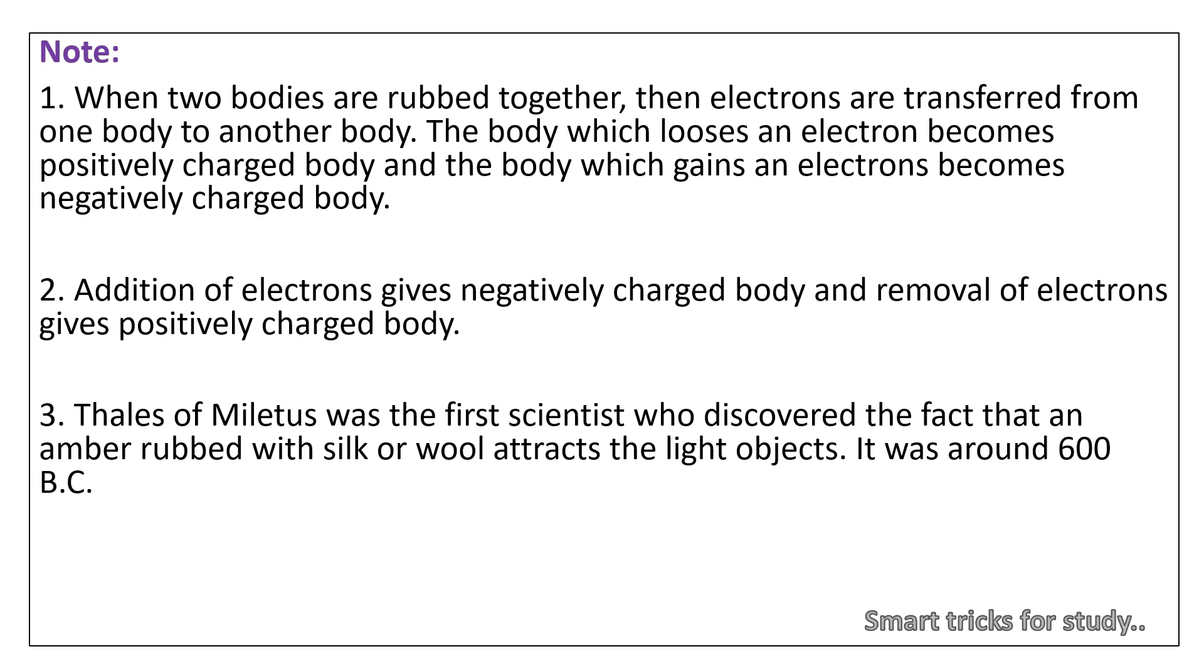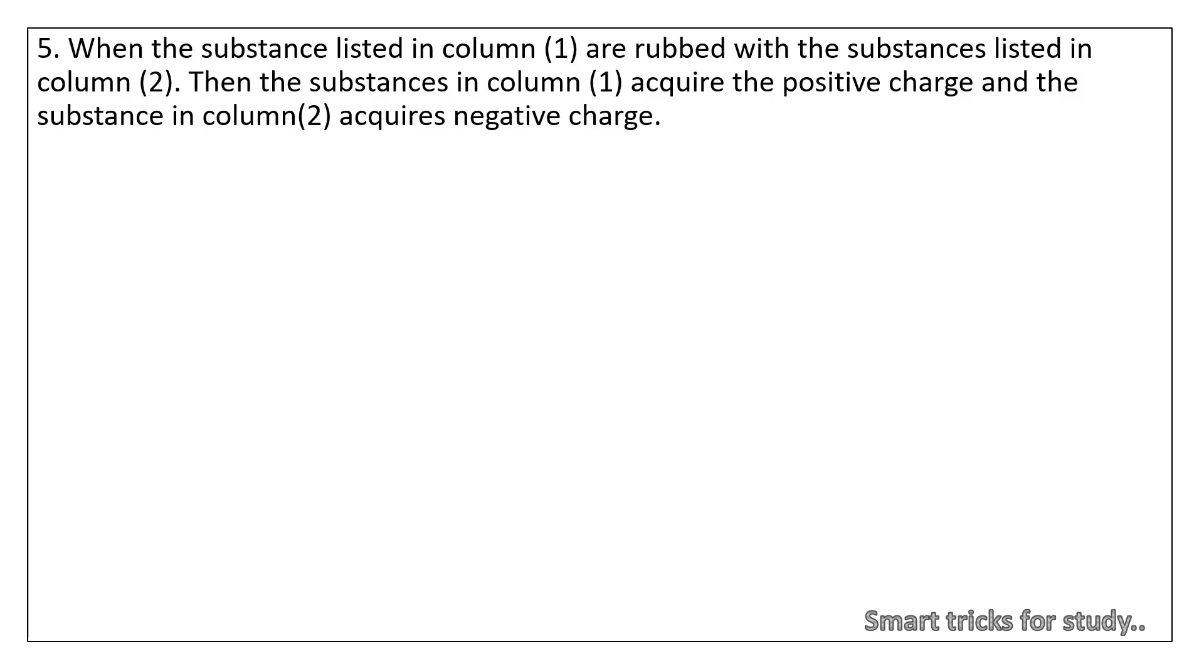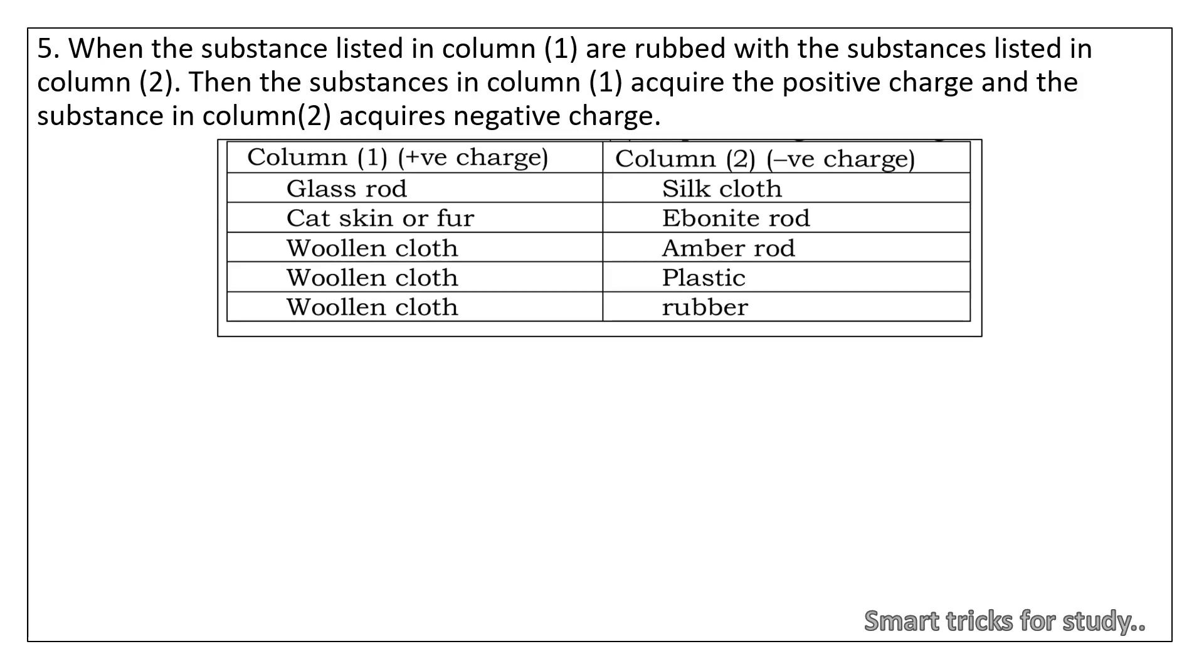Thales of Miletus was the first scientist who discovered the fact that an amber rubbed with silk or wool attracts light objects. It was around 600 BC. Mass of a body is always positive, whereas charge can be either positive or negative. When the substance listed in column 1 are rubbed with the substances listed in column 2, then the substances in column 1 acquire the positive charge and the substance in column 2 acquires negative charges. They are: glass rod with silk cloth, cat skin or fur and ebonite rod, woolen cloth and amber rod, woolen cloth and plastic, woolen cloth and rubber.